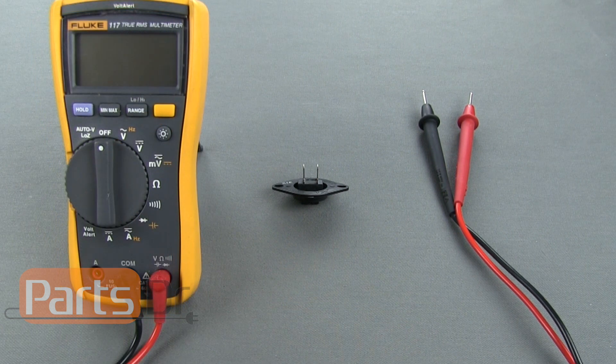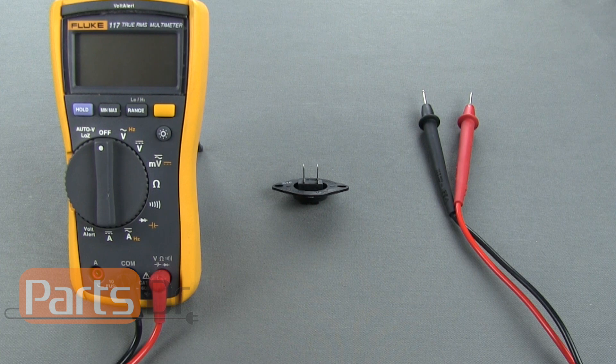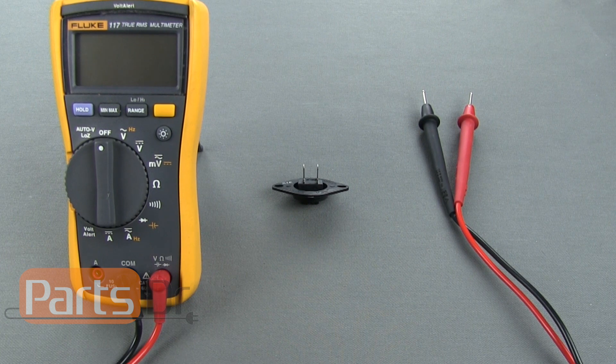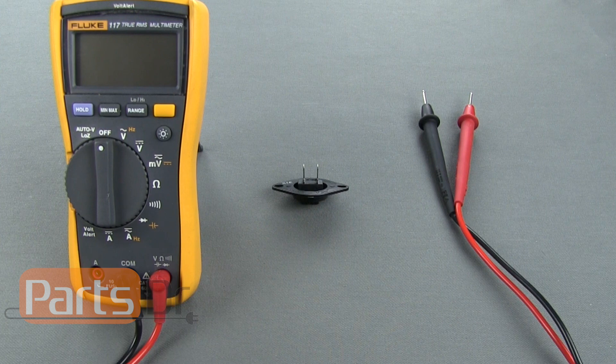To test your thermistor you will first need to unplug the dryer, disconnect the wires to the thermistor and remove the thermistor from the dryer.